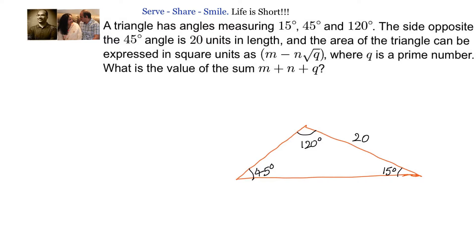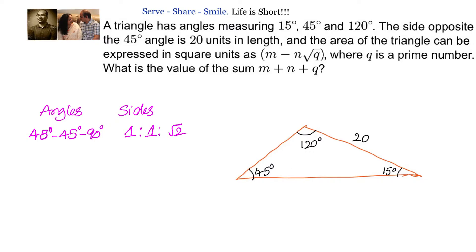In the first method, we will consider that we don't know the value of 15 degrees — we know only 30, 60, 90, and 45 degrees for trigonometric ratios. We know that if the angles are in the ratio 45-45-90, the sides are in the ratio 1:1:√2, and for 30-60-90, the sides are in the ratio 1:√3:2. We will leverage this information to find the area of the triangle.